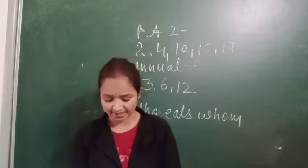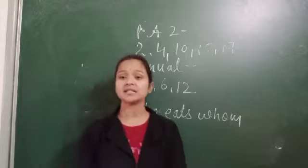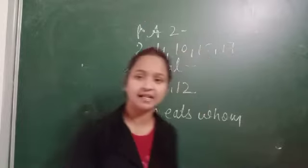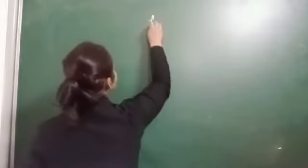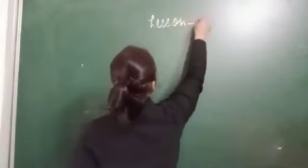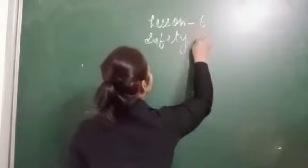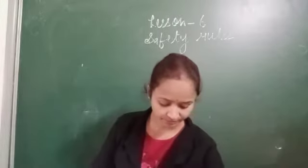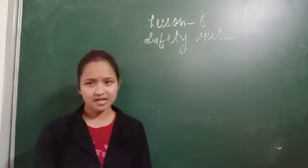So I will start with Chapter 6. The next chapter for the annual examination is Chapter 6 — these are the Safety Rules. Let's start with Chapter 6, Safety Rules.